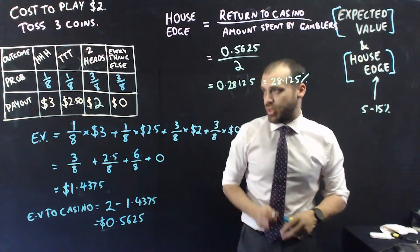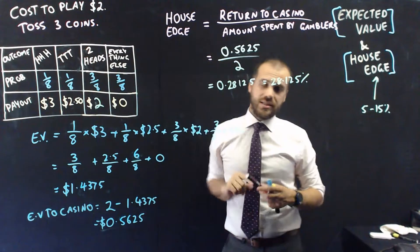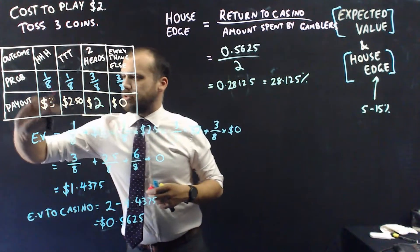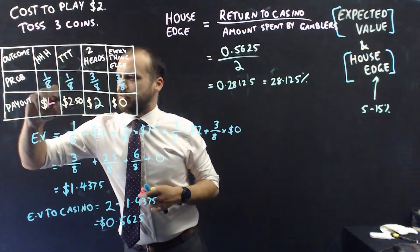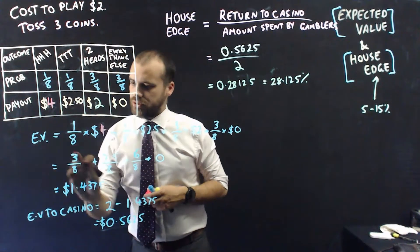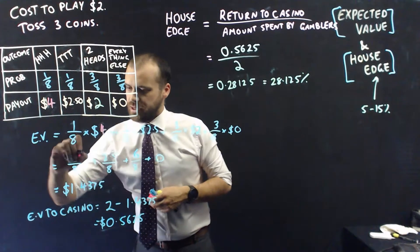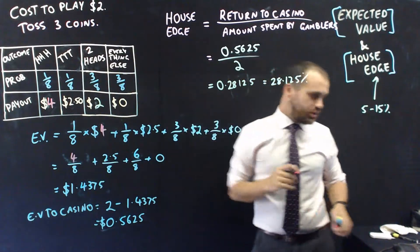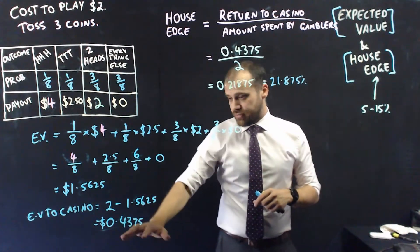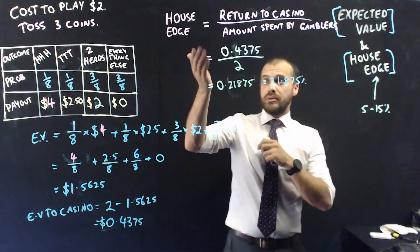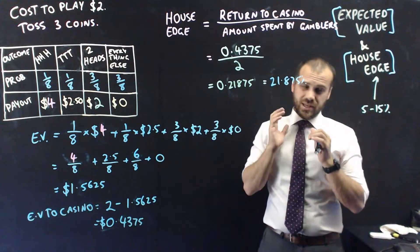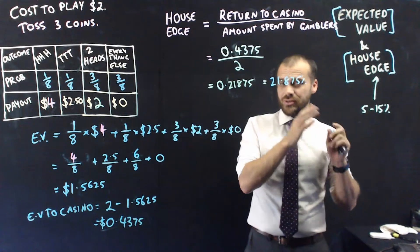I'm going to make that change. I'm going to make heads, heads, heads a bit more of a jackpot, not $3 anymore. I'm going to make it $4. Changing that payout to $4 did change things. The expected value is less for the casino again, but the house edge is still 21.875%, which is still not in the fun zone.